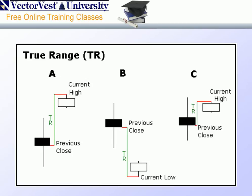Wilder would use the greatest of those computed values for the value of the true range of that bar. To extend the concept of true range to average true range, as we look at several bars over time, we can simply take the average of that look-back period — the number of bars we're including in our sample — and take the average value of that average true range.